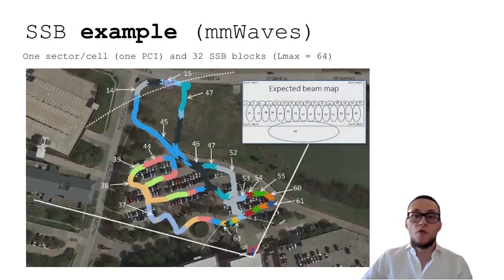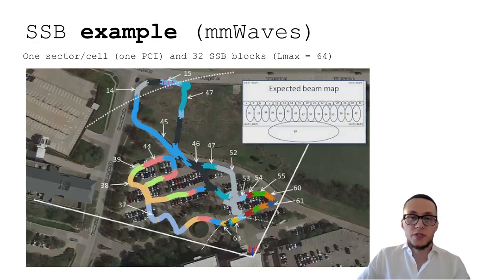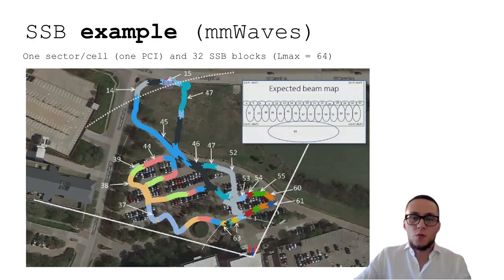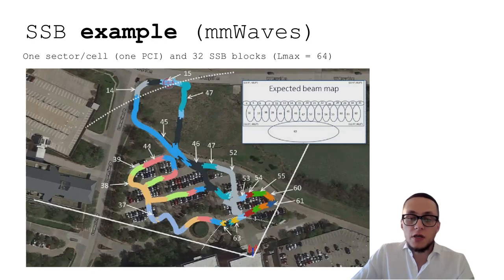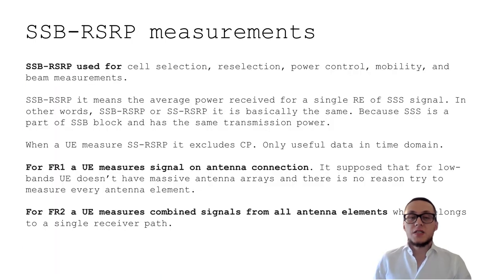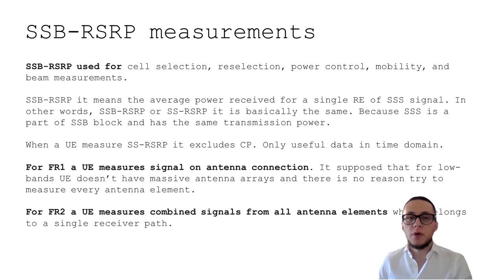Here is an example of millimeter waves, where up to 64 different SSB beams are possible. That antenna system supports 32 SSB blocks, and you can see how those blocks are allocated in the beam map. In the big picture, we can see how different beams with different SSB indexes serve different areas — this data is from a real drive test. SSB RSRP is used for cell selection, reselection, power control, mobility, and other measurements.